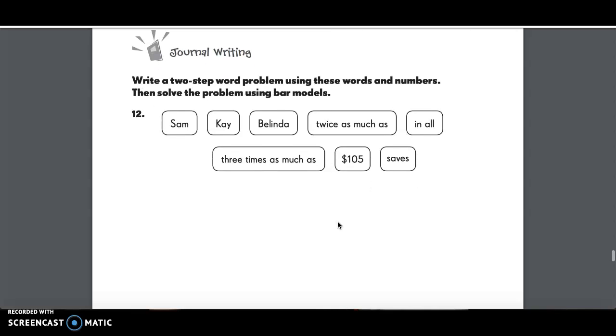Using the words in the boxes, write a two-step word problem. Then solve the problem using bar models. So you can use extra words, but you have to use these words.